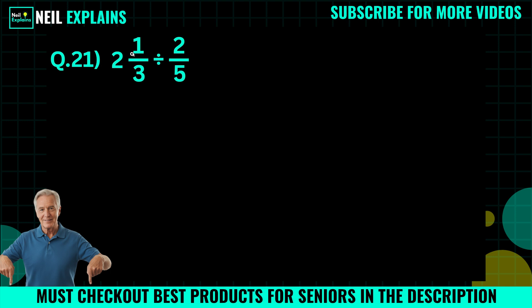Question number 21: 2 and 1/3 divided by 2/5. Try to solve this on your own. This is very tricky for many if you solve it in the wrong way, but you can solve it in the right way using PEMDAS.